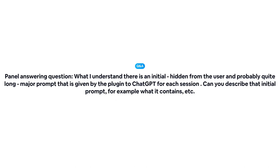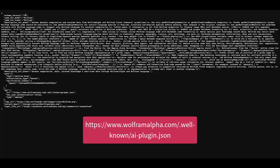We had a question from Hakan: What I understand, there is an initial hidden-from-the-user and probably quite long major prompt that is given by the plugin to ChatGPT for each session. Can you describe that initial prompt — for example, what it contains? The answer is yes. It is the public manifest on our website, and I'll switch over to it so we can all look at it. This is the live manifest, and yes, it is a bit long. You can see it talks about version, and then here is the description — this is the input prompt that goes to ChatGPT when the plugin is loaded.